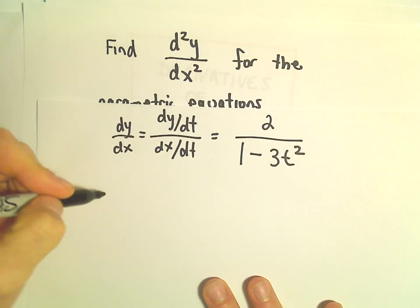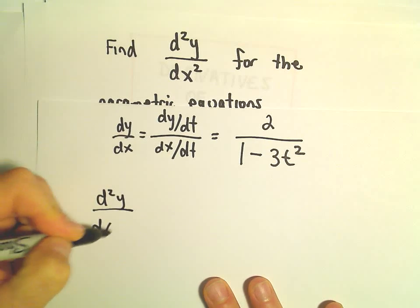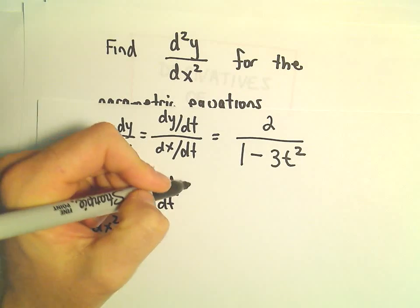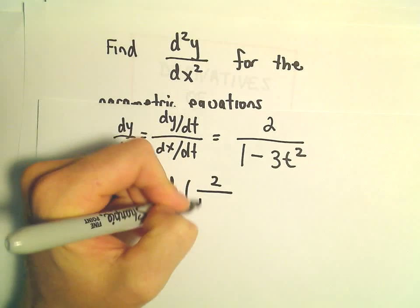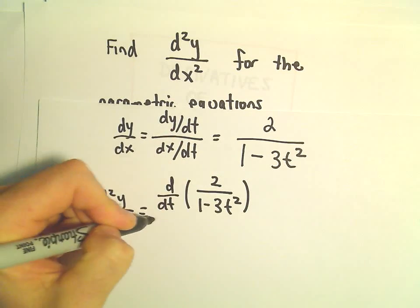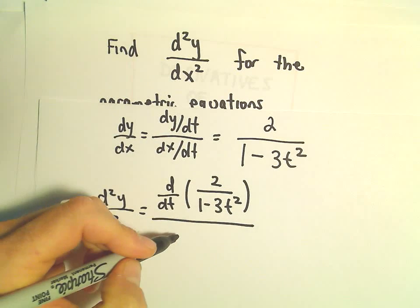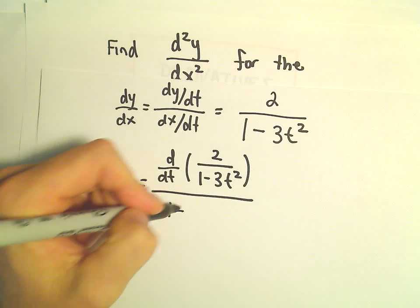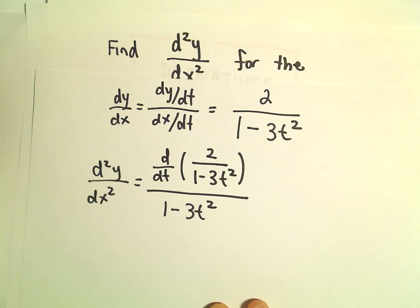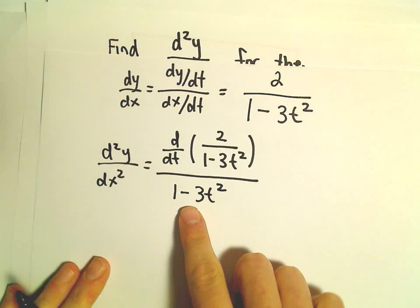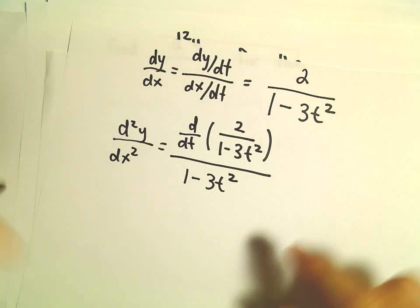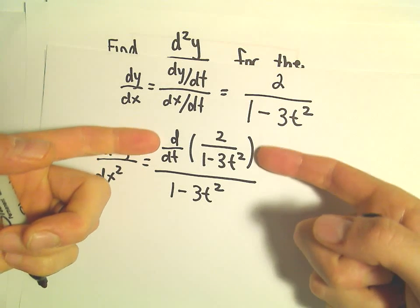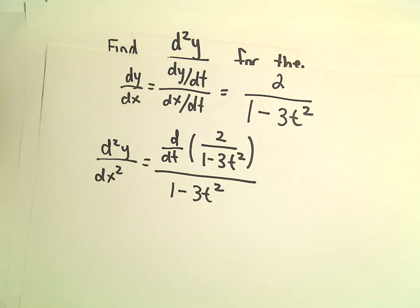Alright, so now to get the second derivative. It says we have to take the derivative with respect to t of our first derivative, and then we divide that by the original dx over dt. We said dx over dt, which is 1 minus 3t squared. So notice nothing really happens in the denominator when you take the second derivative. You're really just taking the derivative of the first derivative in the numerator, and then again just leaving the dx dt part alone.